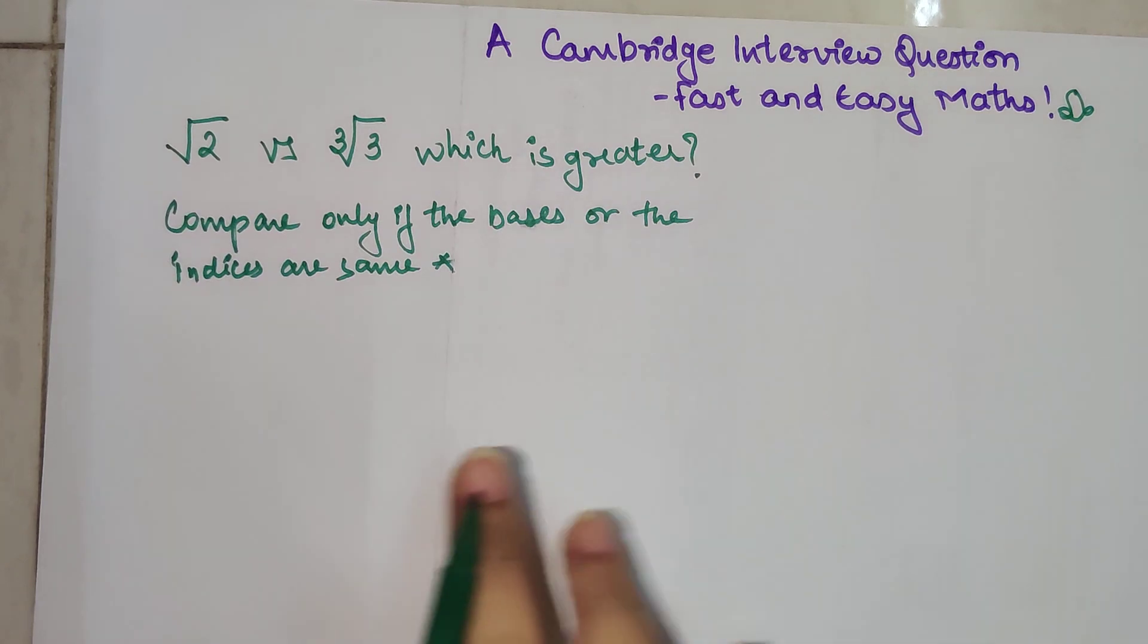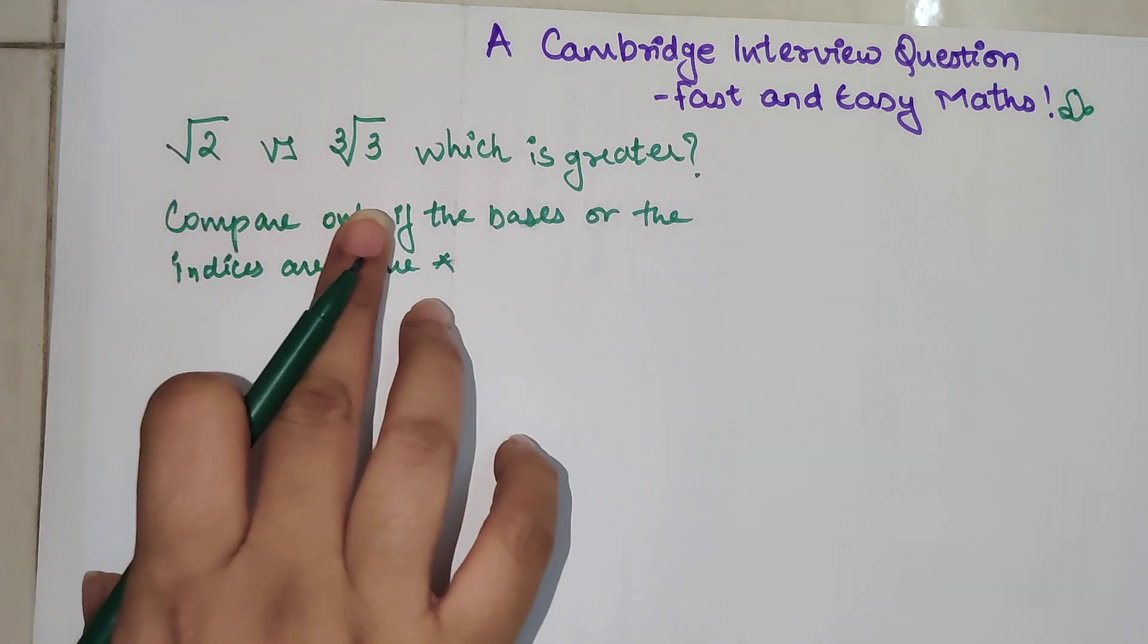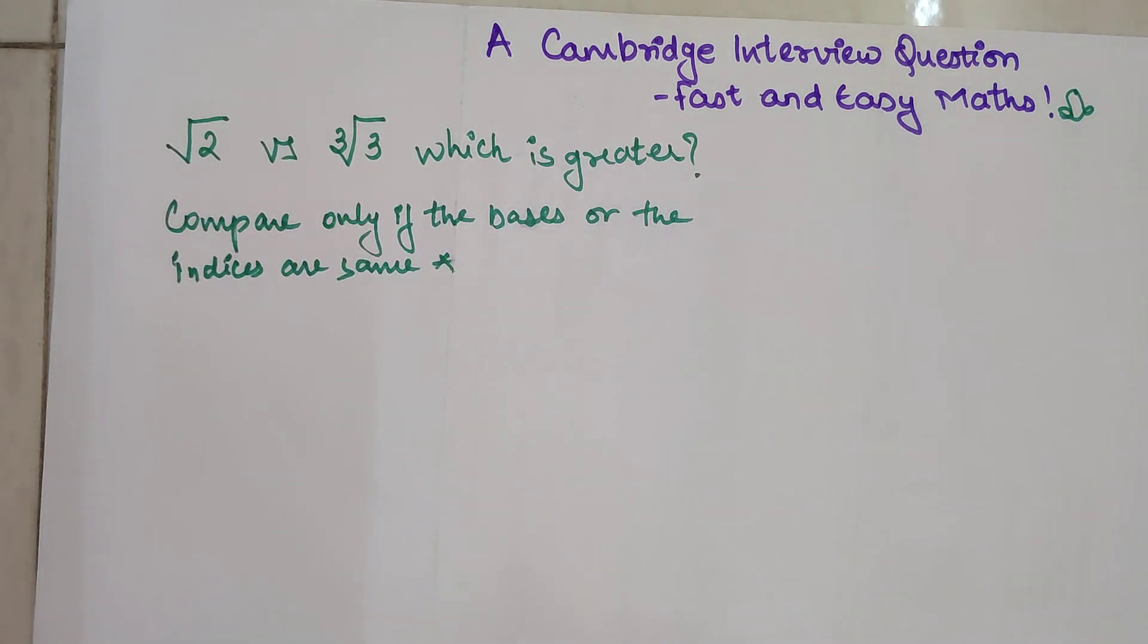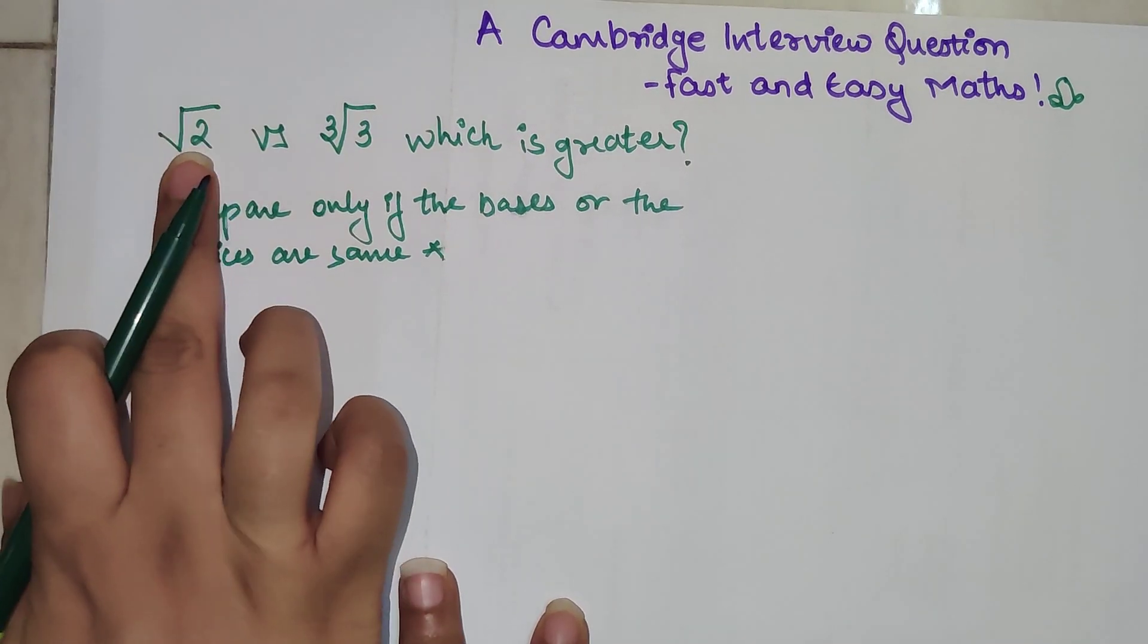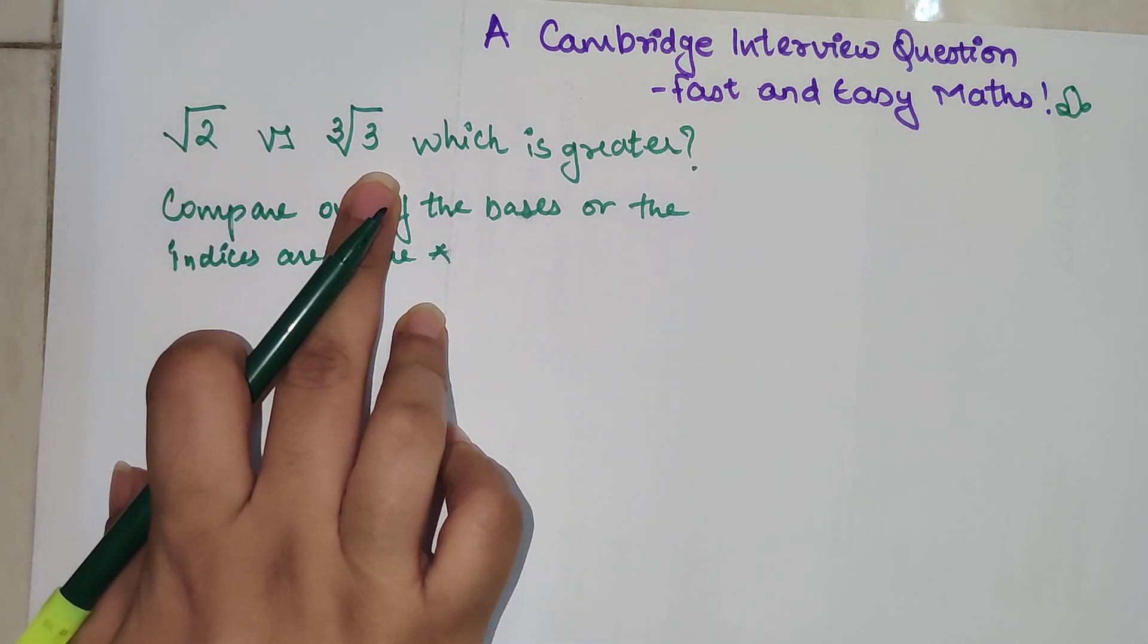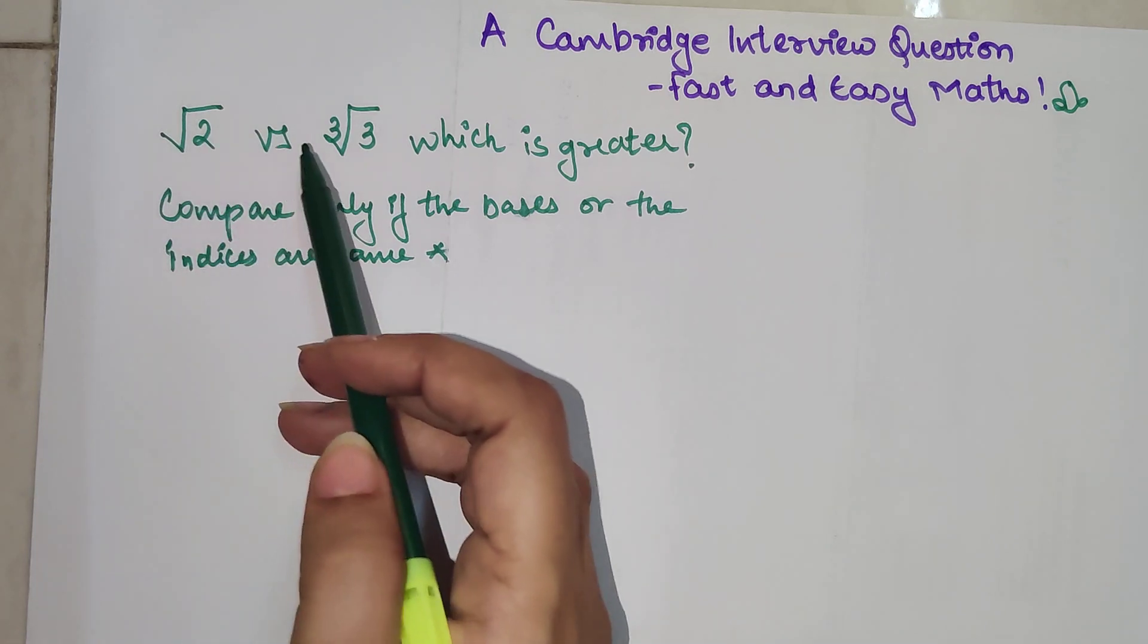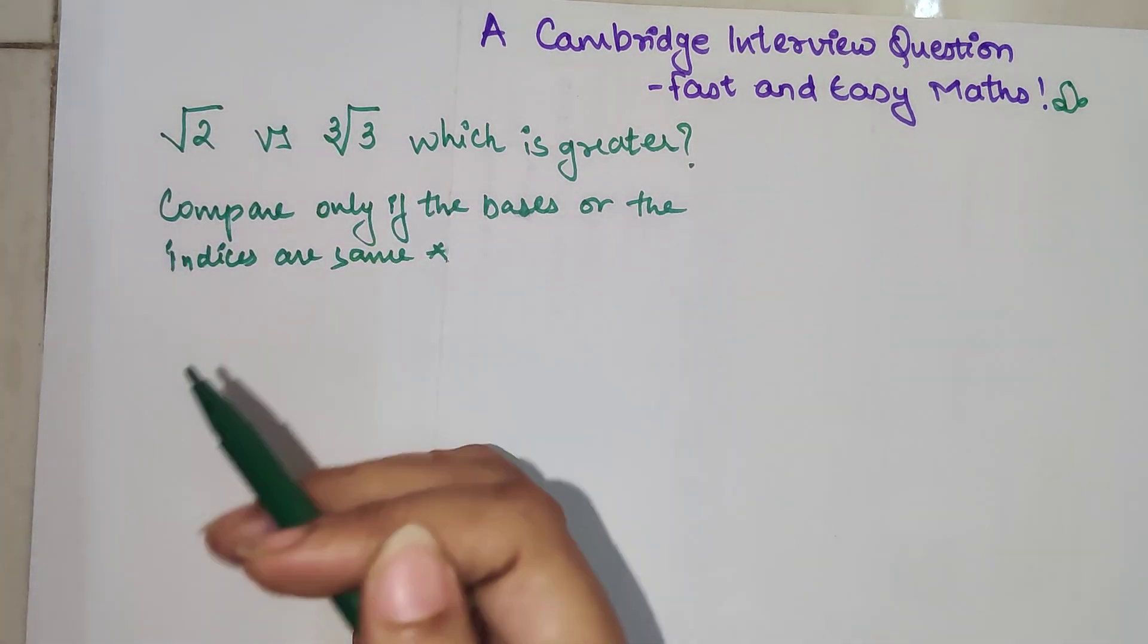Here in this case, we are dealing with a square root and a cube root. So getting to your answer is a bit more difficult. The bases are clearly different: this is 2 and this is 3. So we know they are not same, but let's try to make the indices of the same power.